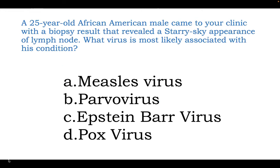Next question: a 25-year-old African-American came to your clinic with a biopsy result revealing a starry sky appearance of a lymph node. What virus is most likely associated with this condition? The salient features are: a 25-year-old, which is generally young, specifically an African-American, and the biopsy of a lymph node shows the starry sky appearance. We are now going into pathognomonic buzzwords. Is this measles? Is this parvovirus? Is this Epstein-Barr? Or is this pox virus?